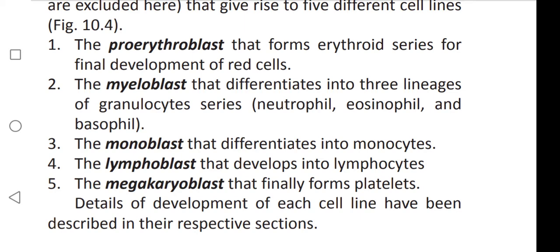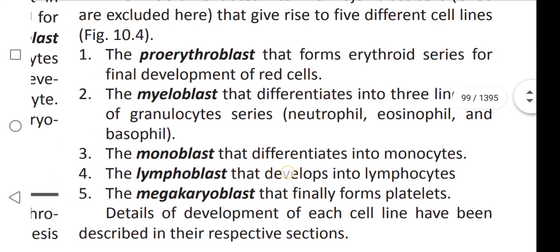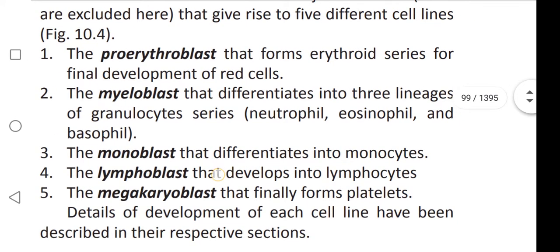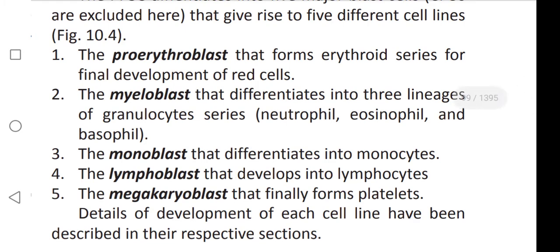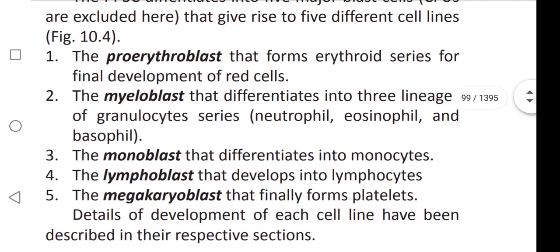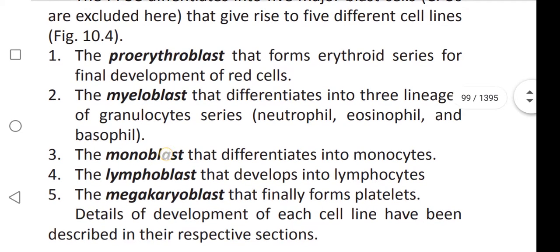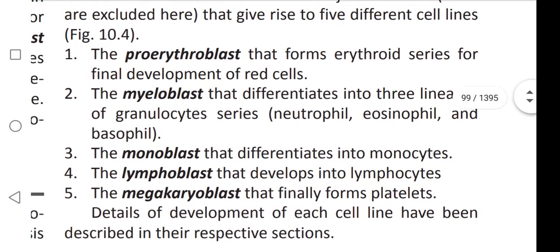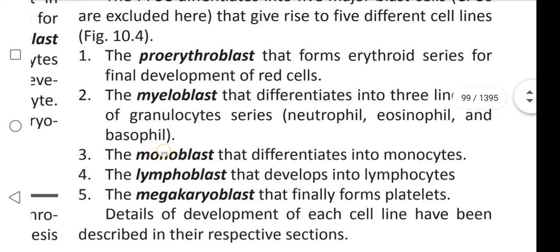The megakaryoblast differentiates and finally forms the platelets. So the five blast cells are: proerythroblast, myeloblast, monoblast, lymphoblast, and megakaryoblast.